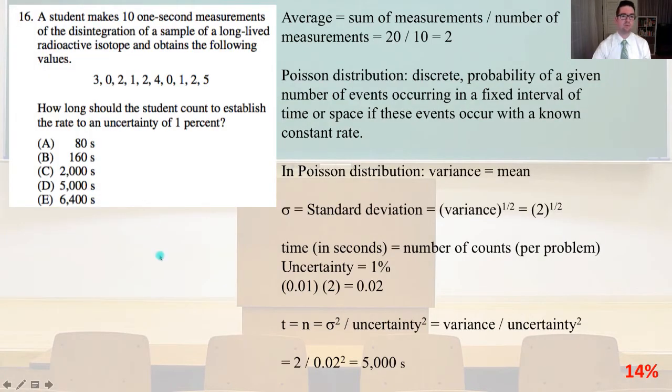The student makes 10 one-second measurements of the disintegration of a sample of a long-lived radioactive isotope and obtains the following values: 3, 0, 2, 1, 2, 4, 0, 1, 2, 5. How long should the student count to establish the rate to an uncertainty of 1%? Our average equals the sum of the measurements divided by the number of measurements, which equals 20 divided by 10, equals 2. Our Poisson distribution is discrete probability of a given number of events occurring in a fixed interval of time or space if these events occur with a known constant rate. That is what we have here.